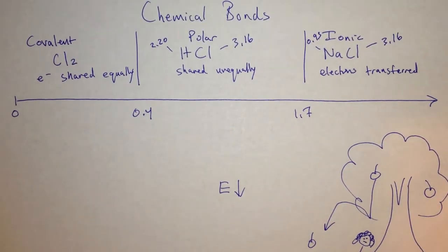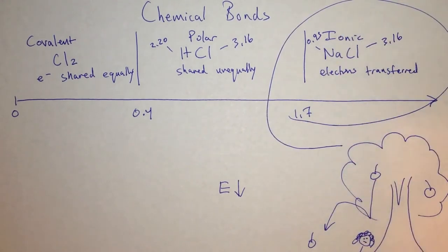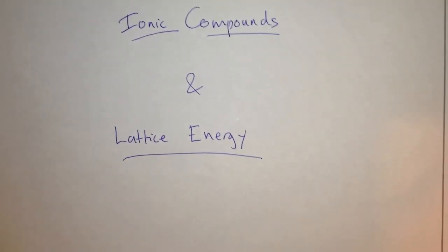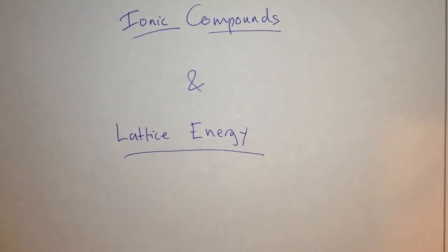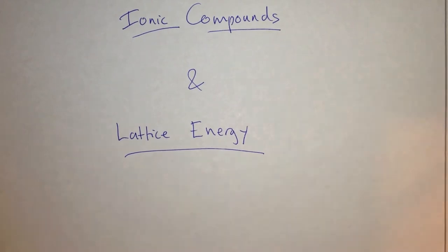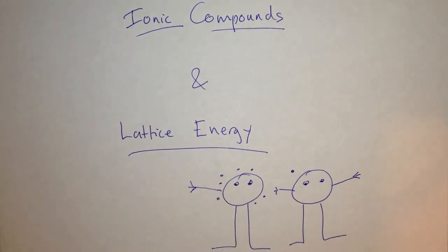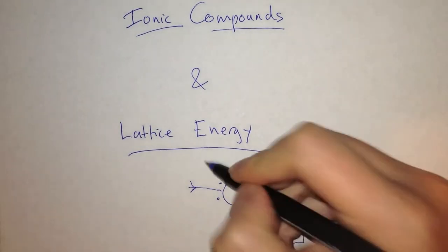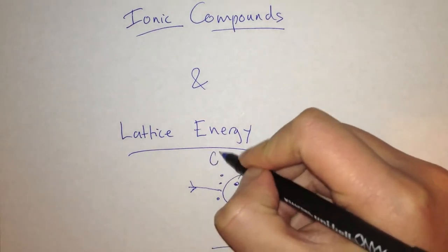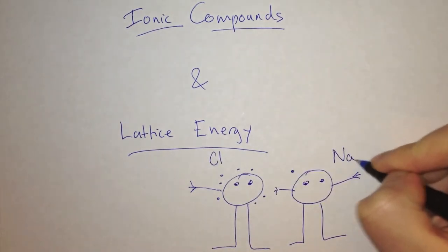In this video, we're going to be looking at the lattice energy of ionic compounds. Let's say I have two atoms — this one is chlorine, and this one is sodium.